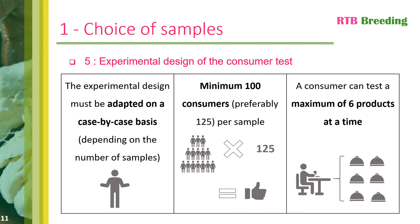We will now move on to the experimental design. The experimental plan needs to be set up and adapted on a case-by-case basis depending on the number of samples chosen. Whatever the number of samples you wish to analyze, you absolutely must interview a minimum of 100 consumers per sample — 125 would be better — bearing in mind that a consumer cannot taste more than six different samples in one session.